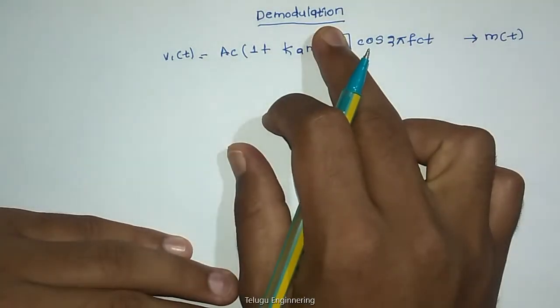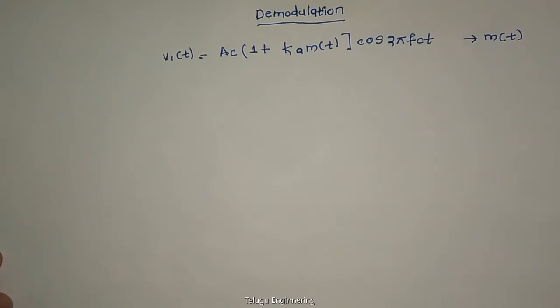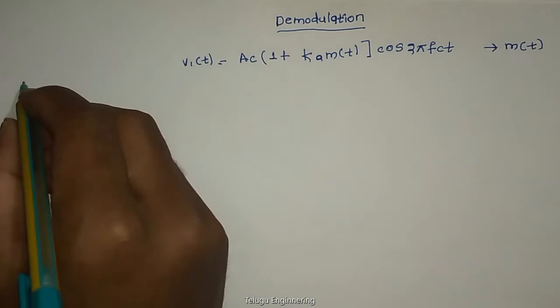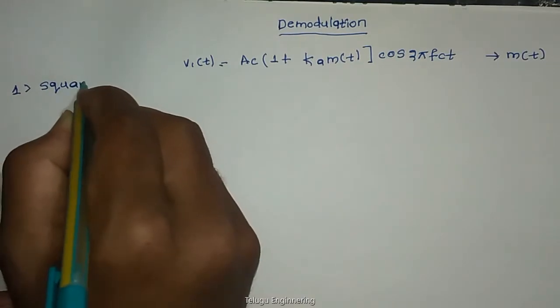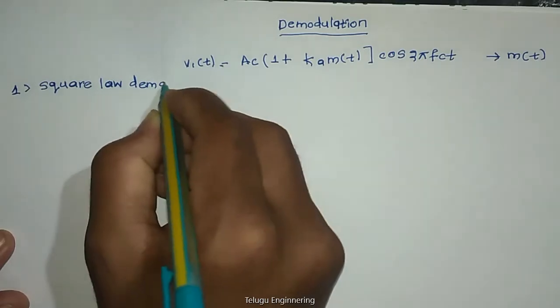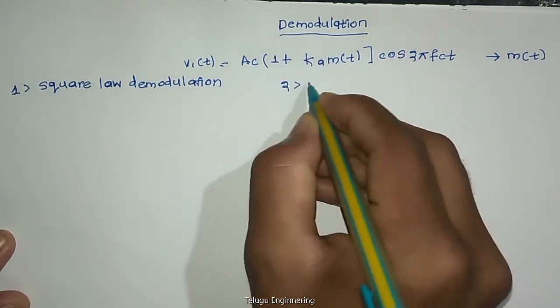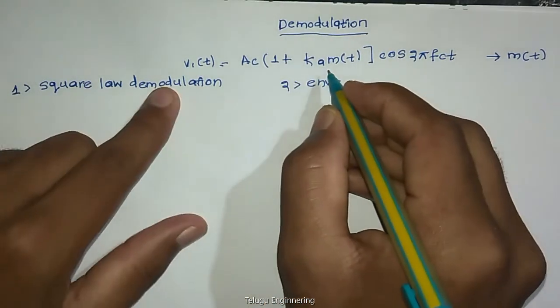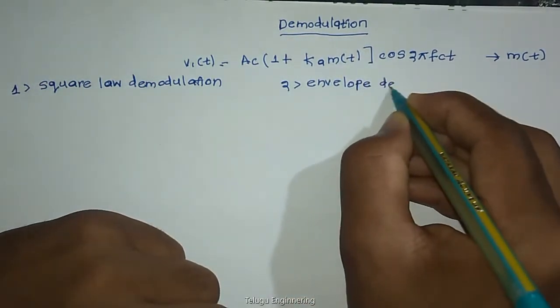So, the name and term is demodulation. We have to demodulate. We will discuss two main methods. First one is square law demodulation, and second one is envelope demodulation or envelope detector.